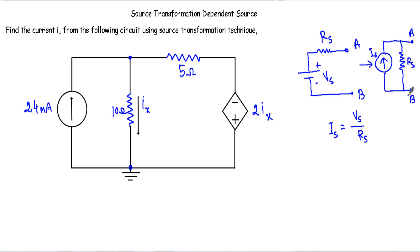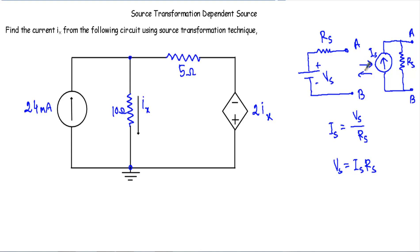Or if I have a current source Is in parallel with a resistor Rs, I can replace that current source and parallel resistor with a voltage source in series with the resistor. I will calculate Vs using the formula Vs = Is × Rs. This transformation from voltage source to current source or current source to voltage source will not affect any parameter external to the a and b terminals.